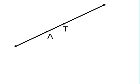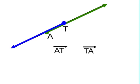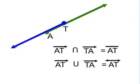Here's a line which we could label AT. We're going to look at ray AT — the ray that starts at A and goes off towards T — and ray TA, the one that starts at T and goes off towards A. AT is highlighted in green and TA in blue. The intersection of those two rays is simply the segment from A to T. So the intersection of ray AT with ray TA is segment AT. And the union of those two rays is the entire line, because every part of the line is covered by one ray or the other. So the union of ray AT with ray TA is line AT.